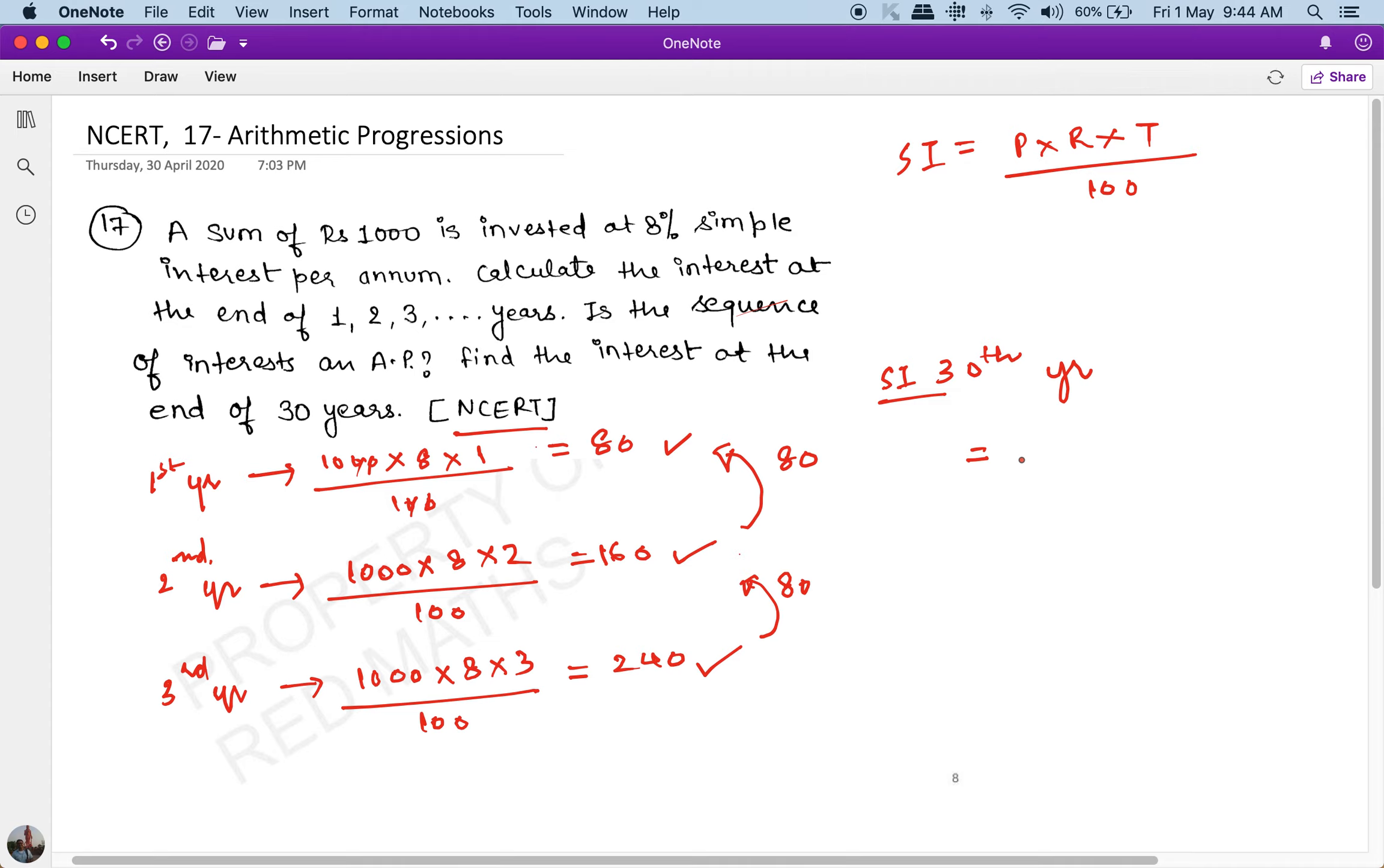Is going to be the first term, that is A plus (n-1) × D. The A and the D are both the same here, which is 80. So this will be 80 + (30-1) × 80. So this will be 2400 rupees. This is the answer.